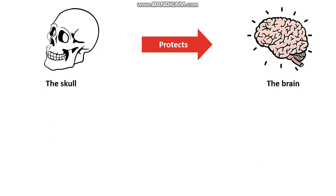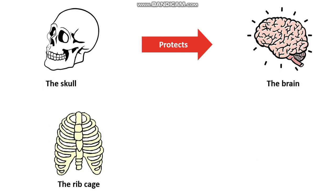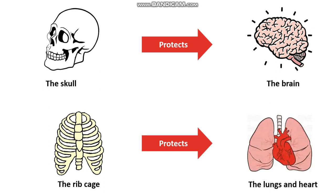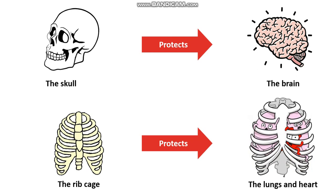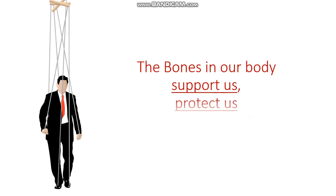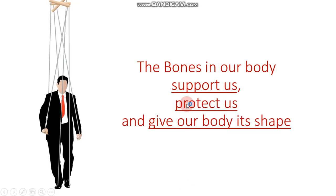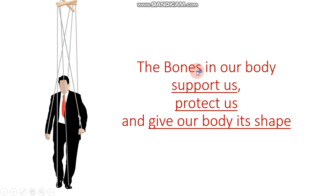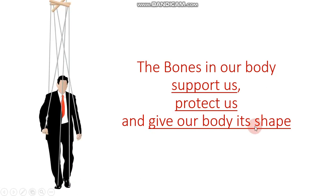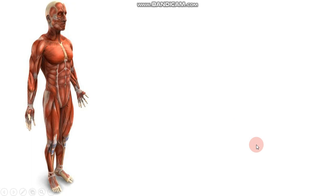For example, the skull protects the brain in our head. Also, the rib cage protects the lungs and heart — they are inside the rib cage, so they are protected from injuries from outside. So our skeletal system also protects us. The bones in our skeletal system support us, protect us, and give our body its shape.